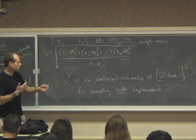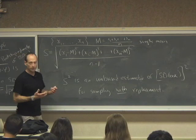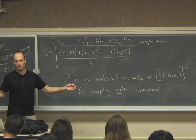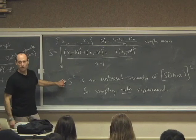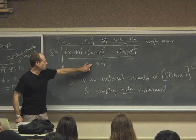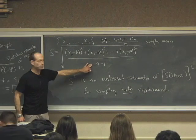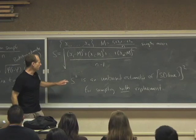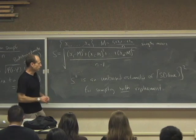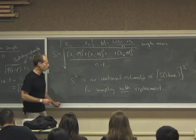And then we have the generalization of that to the bootstrap estimate for a box that has things other than 0s and 1s. And then we have the slight variant of that, the sample standard deviation, which divides by n minus 1 instead of n before taking the square root, tends to be slightly larger. And it has this funny characteristic that it's an unbiased estimate of the SD of the box squared.